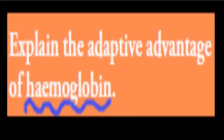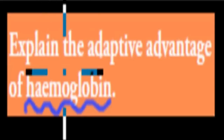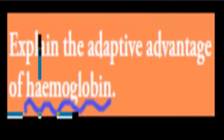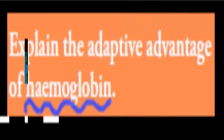Welcome back. In the last video, we talked about white blood cells and red blood cells. In this video, we'll cover something quite related to red blood cells — more specifically, what's actually inside red blood cells. The dot point says: explain the adaptive advantages of hemoglobin.